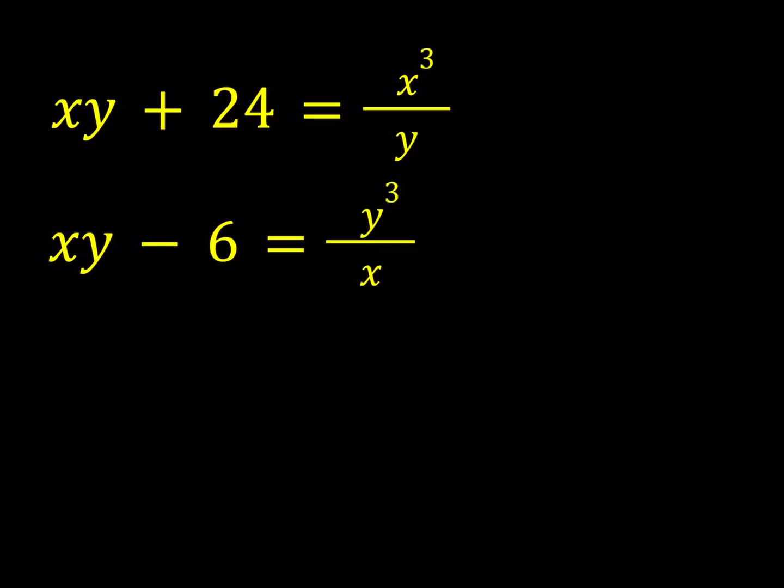So what happens when I do? I'll multiply xy plus 24 by xy minus 6. On the right hand side, I'll have this. Now when I simplify this, obviously we don't want x to be 0 or y to be 0. When they're not 0, then we're good. We can just go ahead and simplify this.